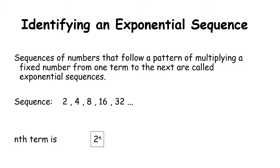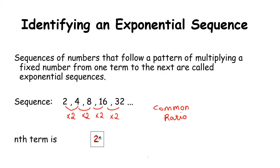This is an exponential sequence written as 2 to the power of n, where the base 2 comes from the fact that we are multiplying by 2 each time. This is now known as a common ratio, as opposed to a difference — differences involve subtraction, whereas the common ratio involves division. So with common ratio 2, we use 2^n: 2^1 = 2, 2^2 = 4, 2^3 = 8, 2^4 = 16, 2^5 = 32, and so on.